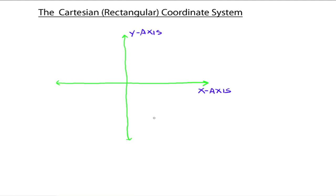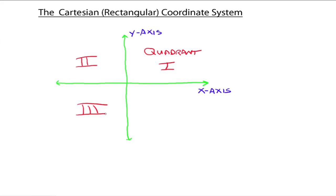These two number lines separate the plane into four quadrants. Quadrant one is up in the upper right-hand corner. Then going counterclockwise: quadrant two is over here on the upper left, quadrant three is down below on the left, and quadrant four is down on the right. They will be referred to by name, so it's important to know that quadrant one starts in the upper right and we go counterclockwise.